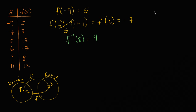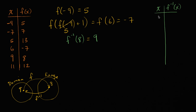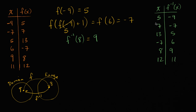To make this clearer, we could actually construct a table with x and f inverse of x — and essentially what I'd do is swap the two columns. So f of x goes from negative nine to five, so f inverse of x is going to go from five to negative nine. Similarly, f inverse maps from seven to negative seven, from thirteen to five, from negative seven to six, from eight to nine, and from twelve to eleven. All I did is swap these columns.